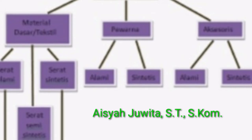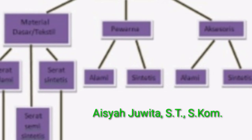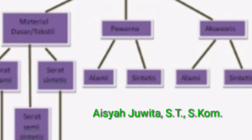Serat alami lainnya adalah serat dari logam seperti benang emas dan perak yang digunakan pada tenun, songket, dan tapis. Serat organik pada umumnya lebih mudah menyerap keringat, lebih terasa sejuk pada tubuh, tidak panas, namun mudah kusut sehingga memerlukan penyetrikaan panas dan rentan terhadap jamur. Tekstil dengan bahan organik dapat rusak jika direndam pada deterjen selama lebih dari 2 jam.